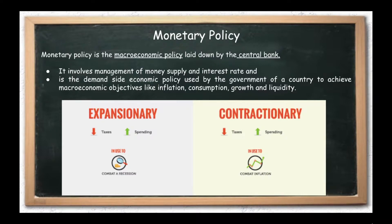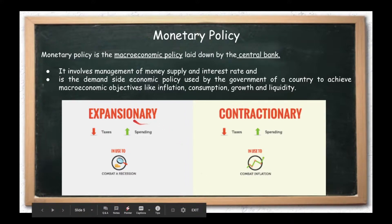Through these instruments, there are changes like interest rate or money supply in the economy. We get to see two natures of policy. One is expansionary and the other is contractionary.